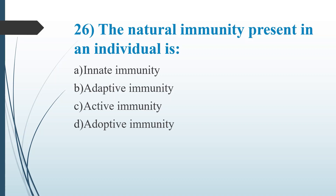Twenty-sixth question: The natural immunity present in an individual is. Option A, innate immunity. Option B, adaptive immunity. Option C, active immunity. Option D, adaptive immunity. Answer is Option A, innate immunity.